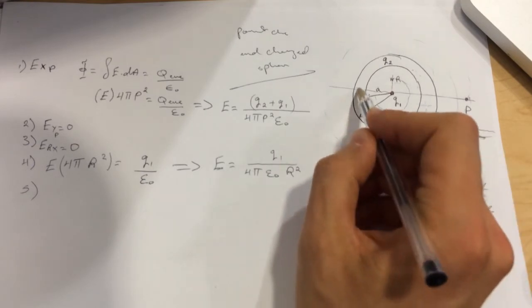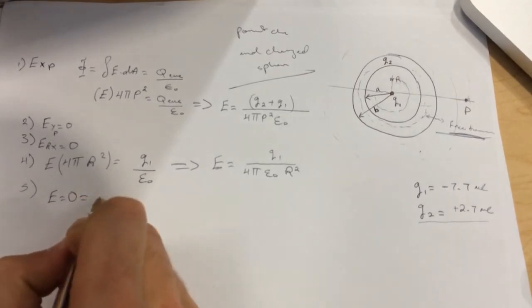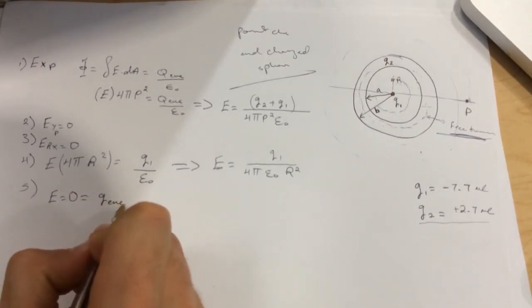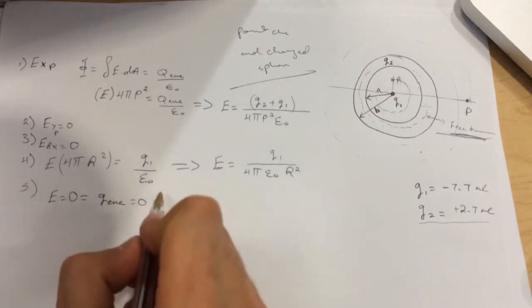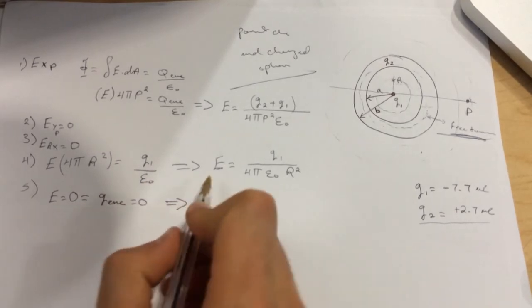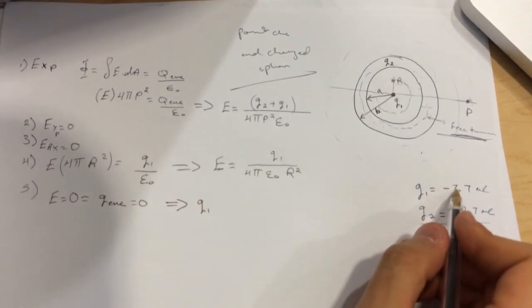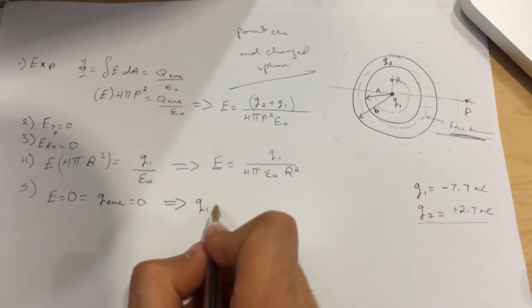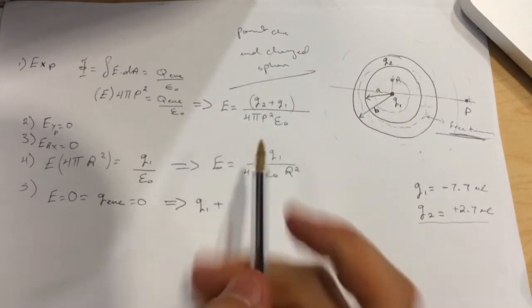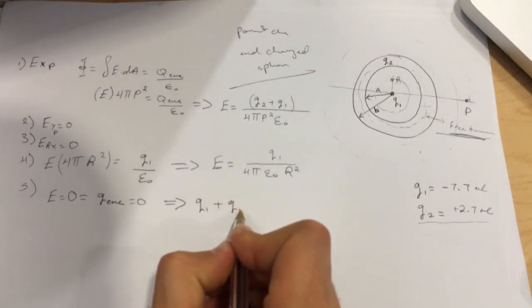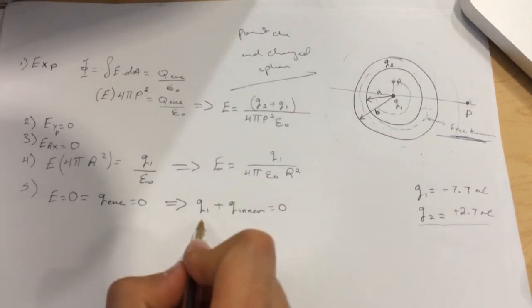When we draw our Gaussian surface, the E should be zero, which also means that the Q enclosed should be zero. That means Q1, which is minus 7.7, plus Q inner will be equal to zero.